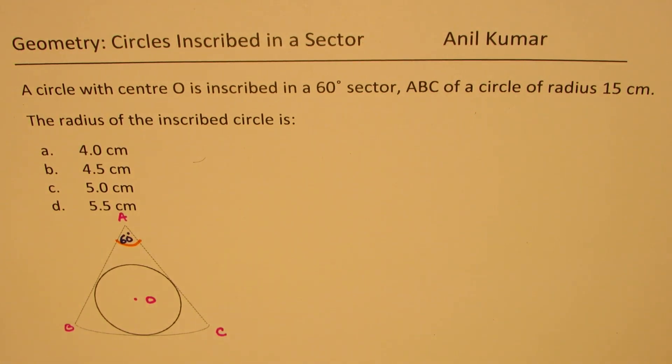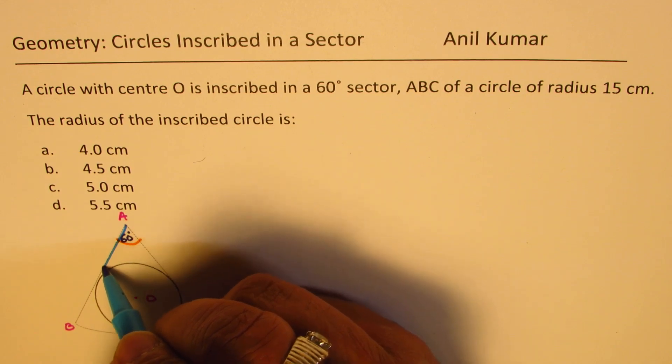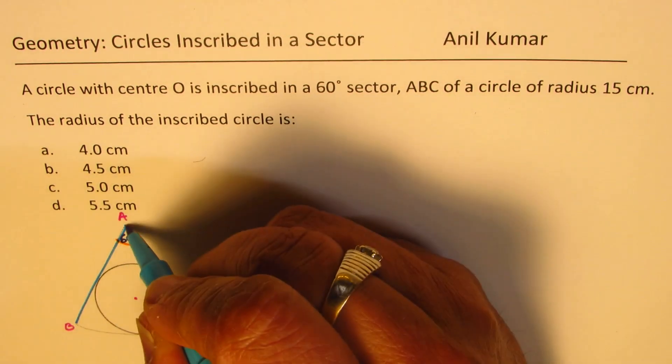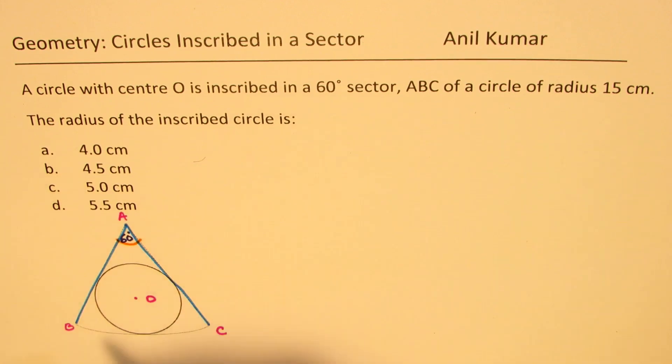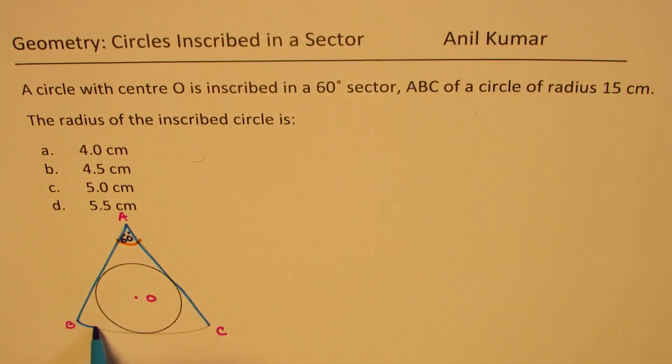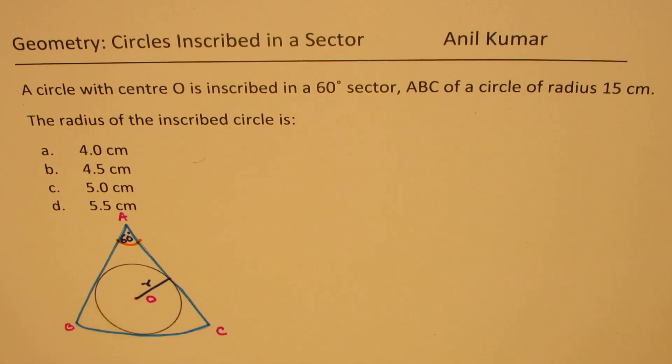So what we are given here is a sector ABC. So let me just make it darker. So that is the sector ABC. Within this sector we have a circle with center O. You need to find the radius of this circle, right? Radius R of this circle.